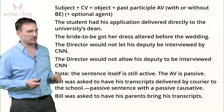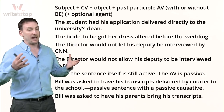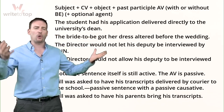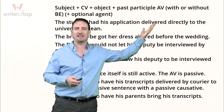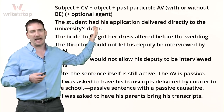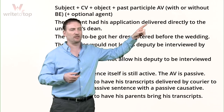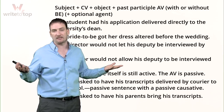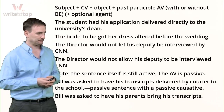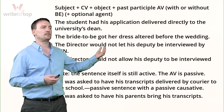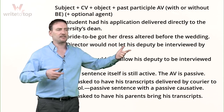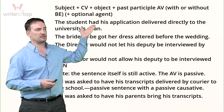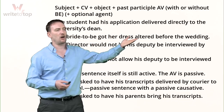The equation: subject + causative verb + object + past participle of the action verb, with an optional agent. The object is actually the object of the action verb. Examples: 'The student had his application delivered directly to the university's dean' — no agent specified. 'The bride-to-be got her dress altered' — altered means fixed. Review: had + delivered, no be; got + altered, no be.